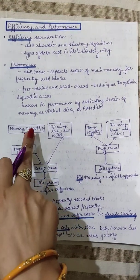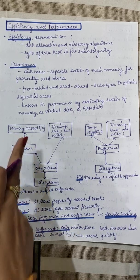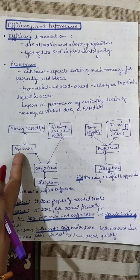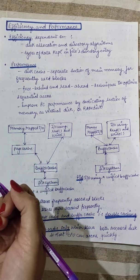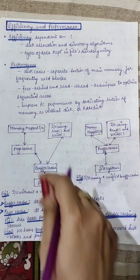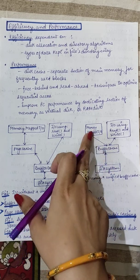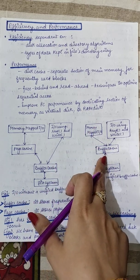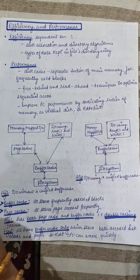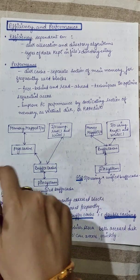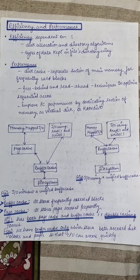When a CPU requests a disk block — data for a file — it searches the page cache for frequently accessed pages. If not found there, it refers to the buffer cache, taking more time. With a unified buffer cache, it stores both referenced pages and referenced blocks, so the CPU refers to it directly, saving time to fulfill any file access request. This is the concept of efficiency and performance — using a unified buffer cache improves both.